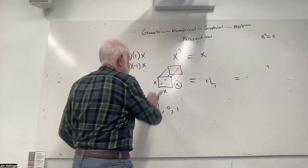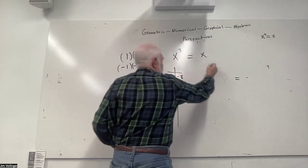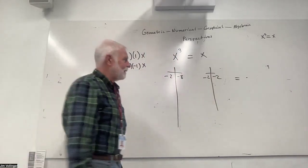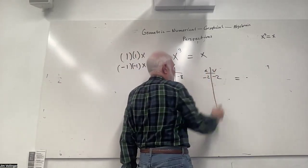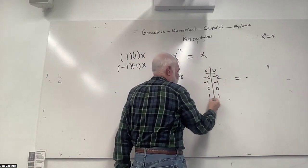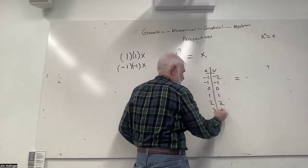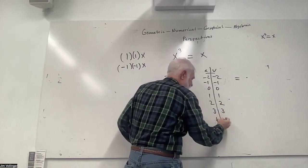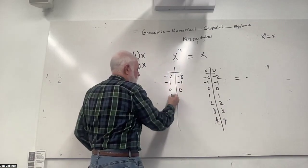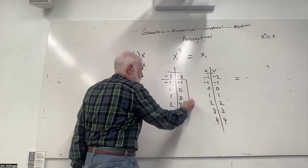Let's do it numerically. Starting at negative two: cube it, get negative 8; x is negative 2 — not equal. Negative one cubed is negative one, and x is negative one — equal! Zero cubed is zero, x is zero — equal! One cubed is one, x is one — equal! Two cubed is eight, x is two — not equal. Three cubed is twenty-seven. Equivalency at negative one, zero, and one — three dimensions confirmed.